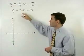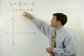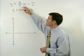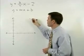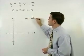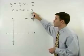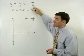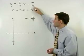Our slope or m therefore is the coefficient of the x term which in this case is 3 fourths. Our b or y-intercept is the constant term which in this case is negative 2.